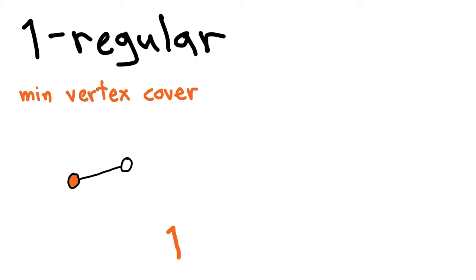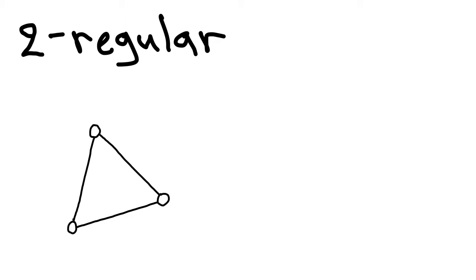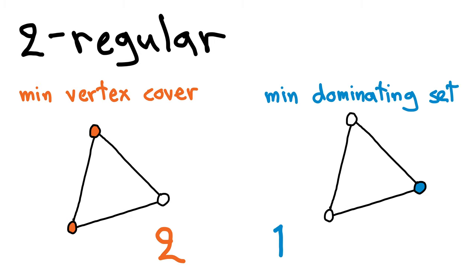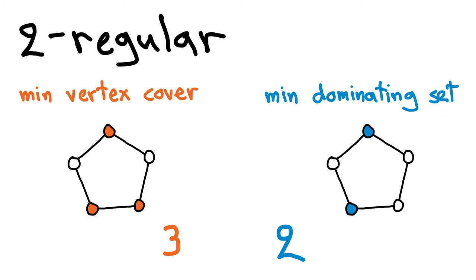Let's quickly go through some examples. Here d equals 1, we have a one-regular graph. Here is a minimum vertex cover X with one node, and a minimum dominating set Y with one node. It is easy to check that X is also a dominating set, and its size is 1 times the size of Y. Here d equals 2, we have a two-regular graph. Here is a minimum vertex cover X with two nodes, and a minimum dominating set Y with one node. We can check that X is also a dominating set, and its size is 2 times the size of Y, just like it should be.